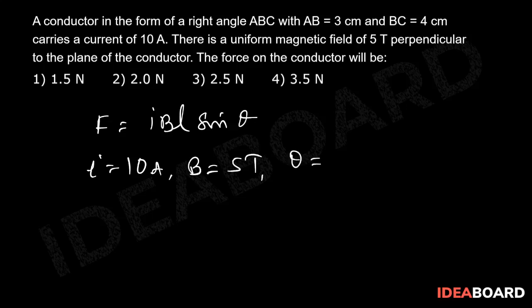Theta equal to 90 degrees and L equal to square root of 3 squared plus 4 squared which is equal to 5 cm, that is 5 into 10 power minus 2 meters.